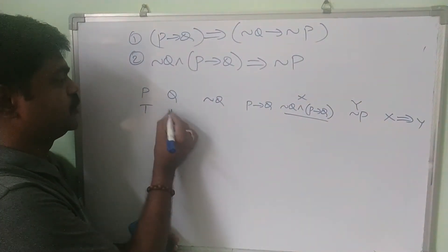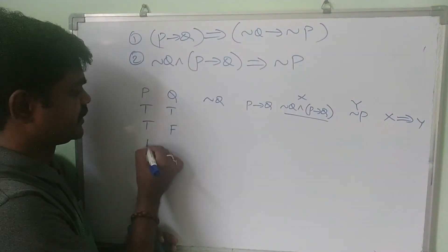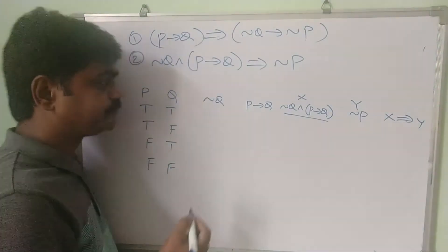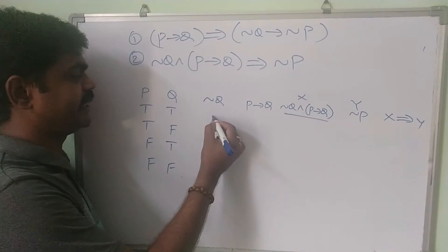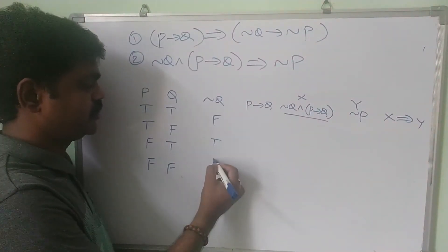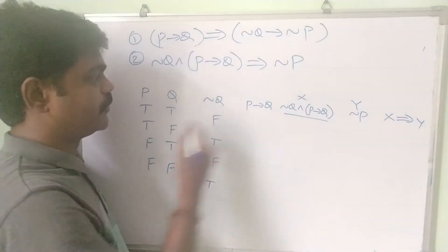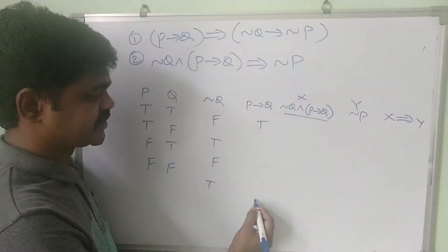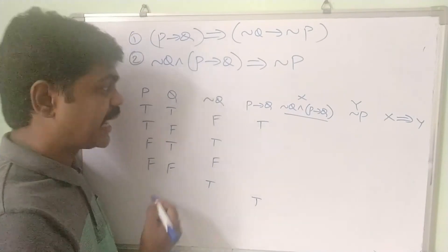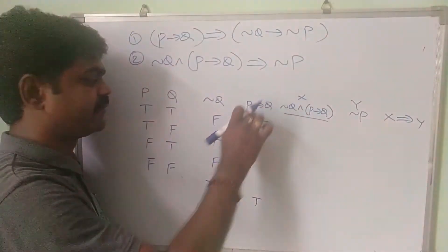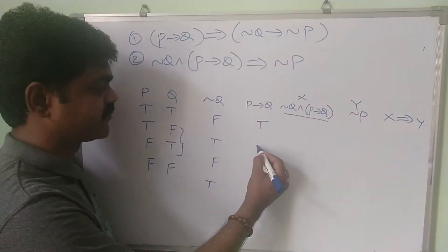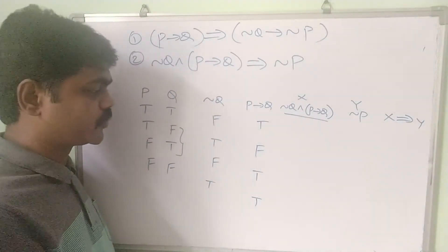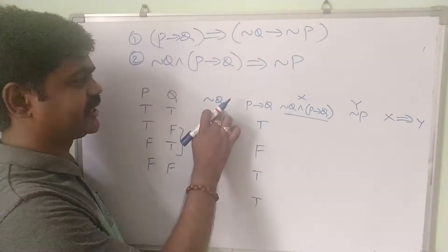The truth value rows for p and q are: TT, TF, FT, FF. For ¬q: false, true, false, true. For p implies q: after the arrow we have q, so write q values — false and true — giving: true, false, true, true.